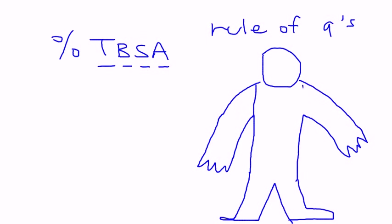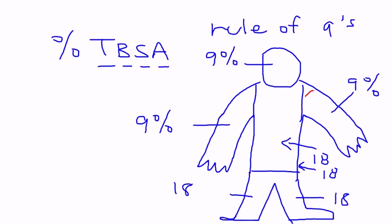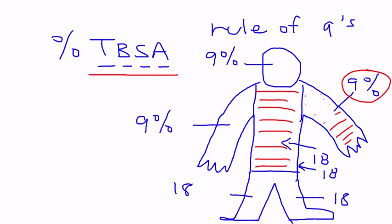For each arm involved, it's 9%. If the head and neck are involved, that's another 9%. The anterior trunk is 18%, and the posterior trunk is another 18%. The legs are 18% each. For example, if a patient burned his entire arm, the total body surface area is 9%. If someone's entire front body including their legs is burned, it would be 18 plus 18 plus 18, which is 54%.